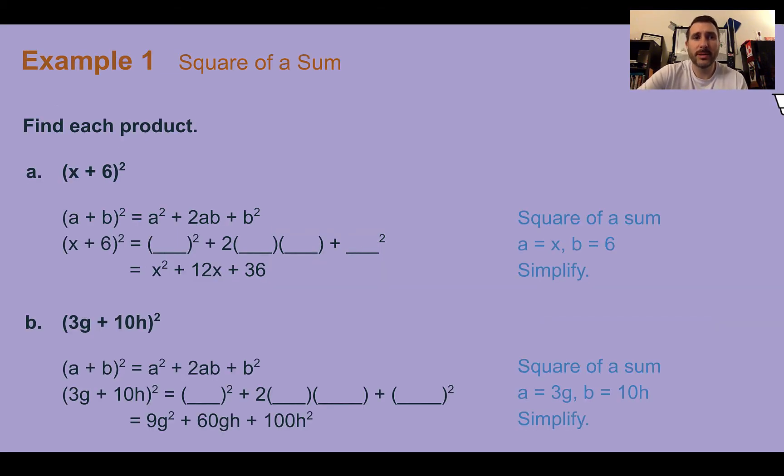Example 1: Square of a sum. Find each product. So first, we have (x + 6)². We're going to follow this pattern that the first number to the second power plus 2 times the two things together, then plus the last number to the second power. So x² plus 2 times x times 6, and then last we'd have 6². The middle, 2 times 6 is 12 with the x. And then 6 times 6 is 36. So this would be our final trinomial product.